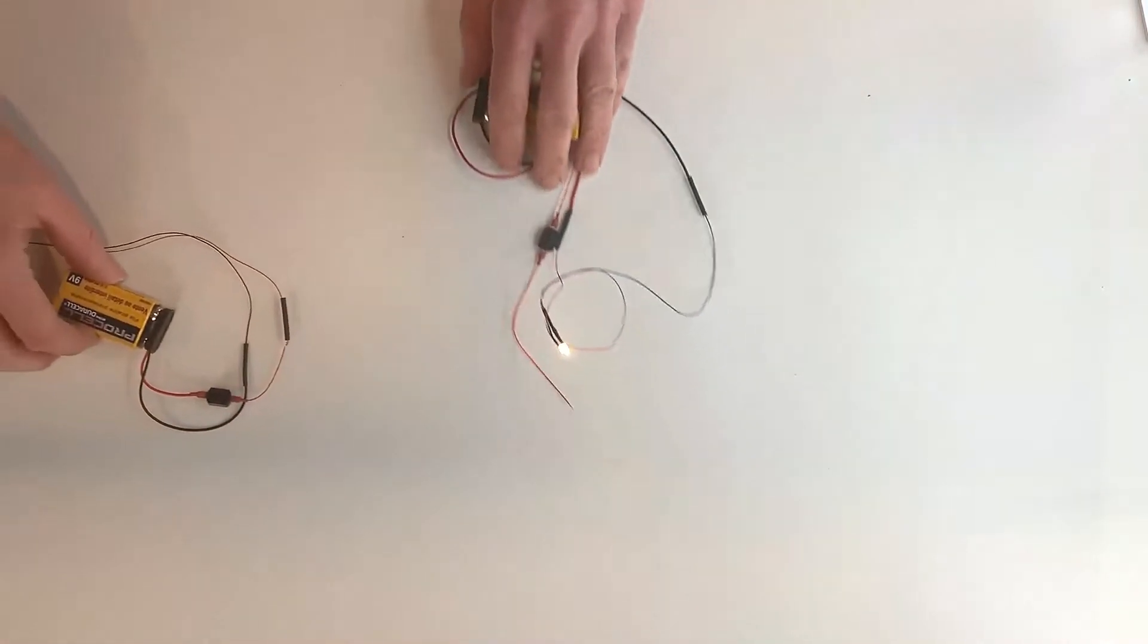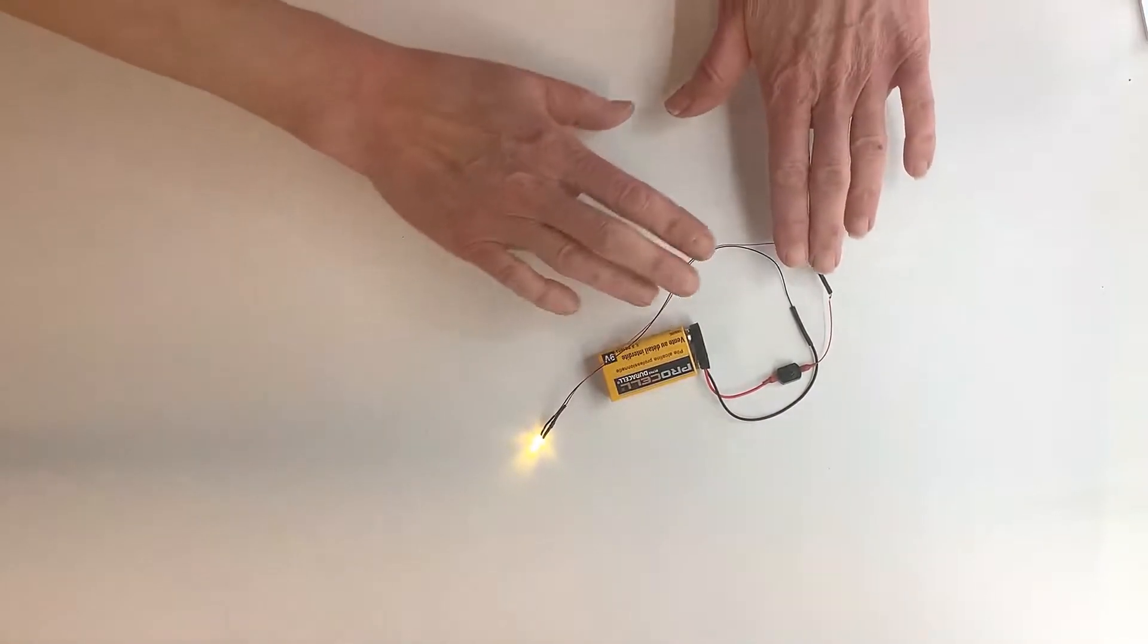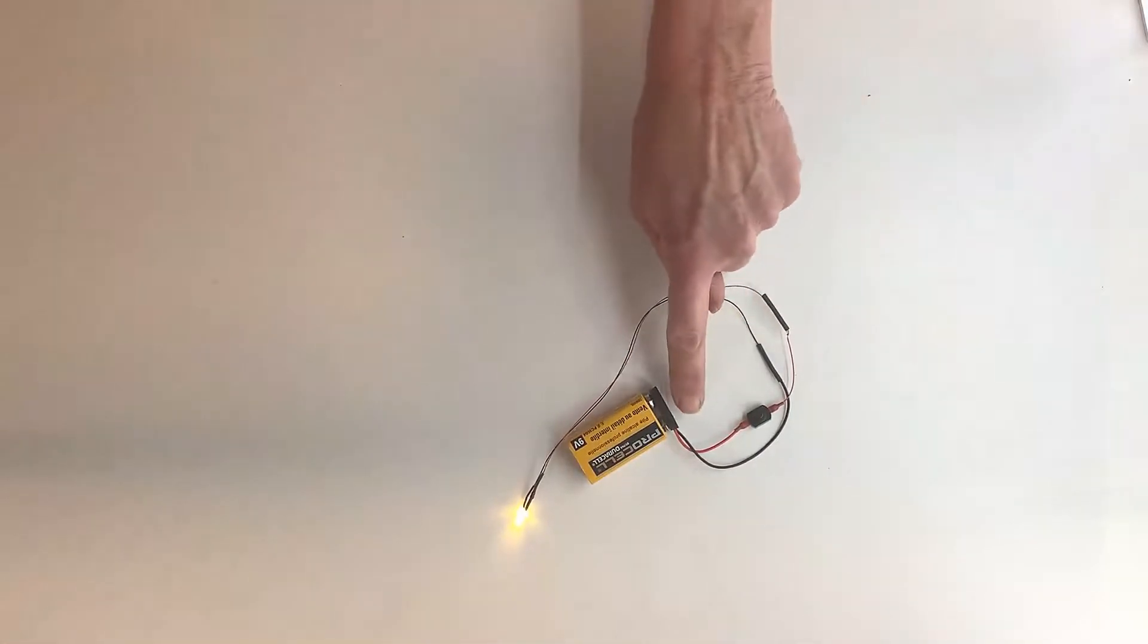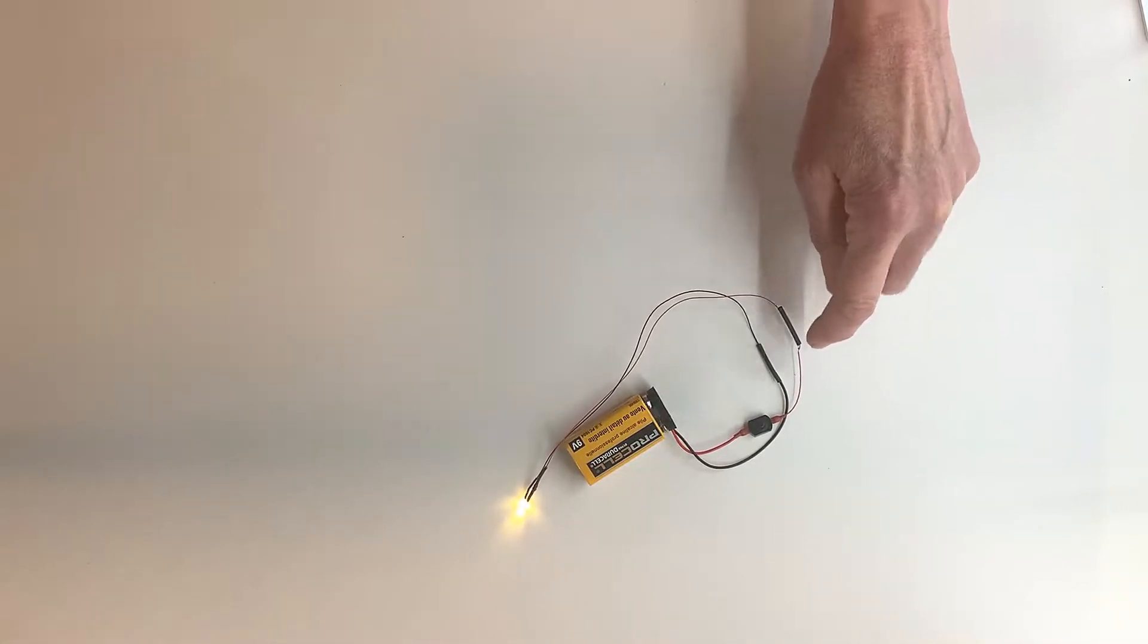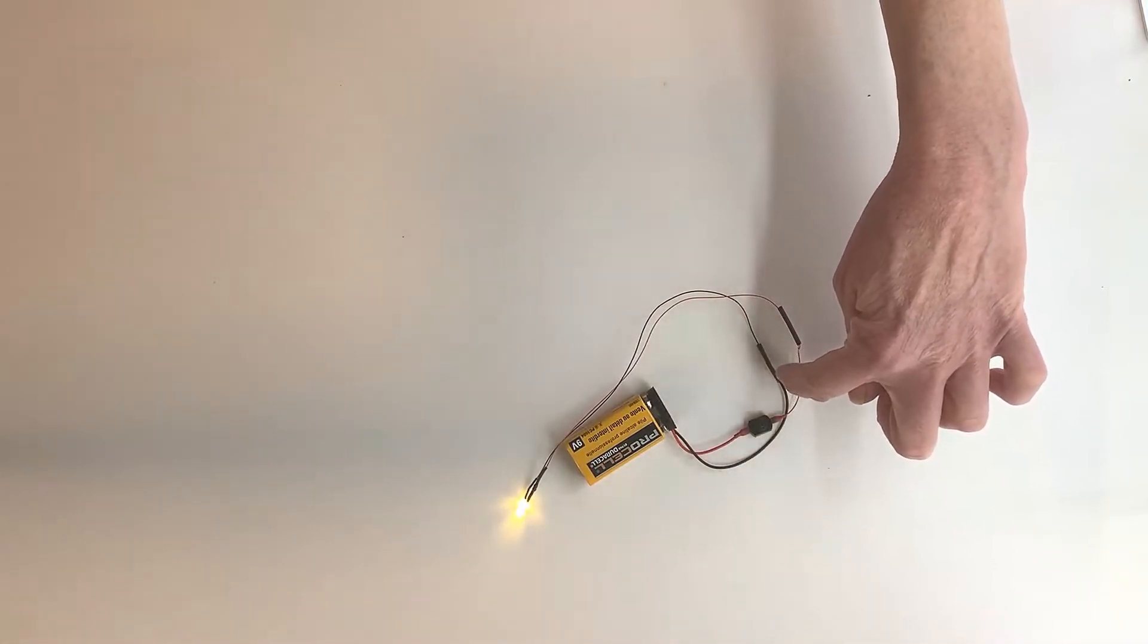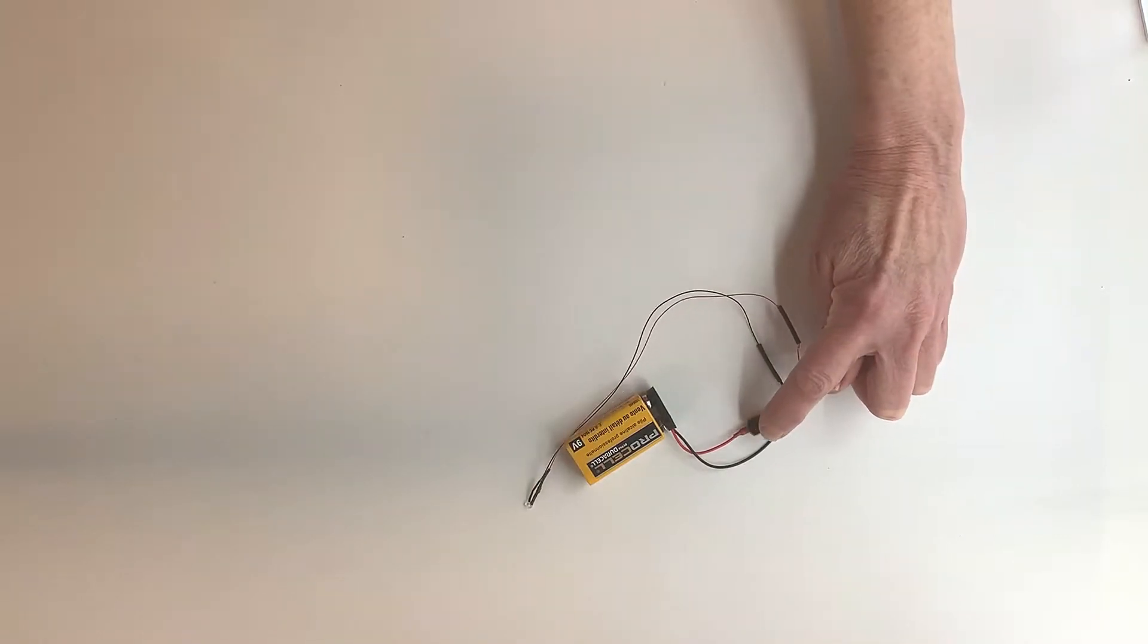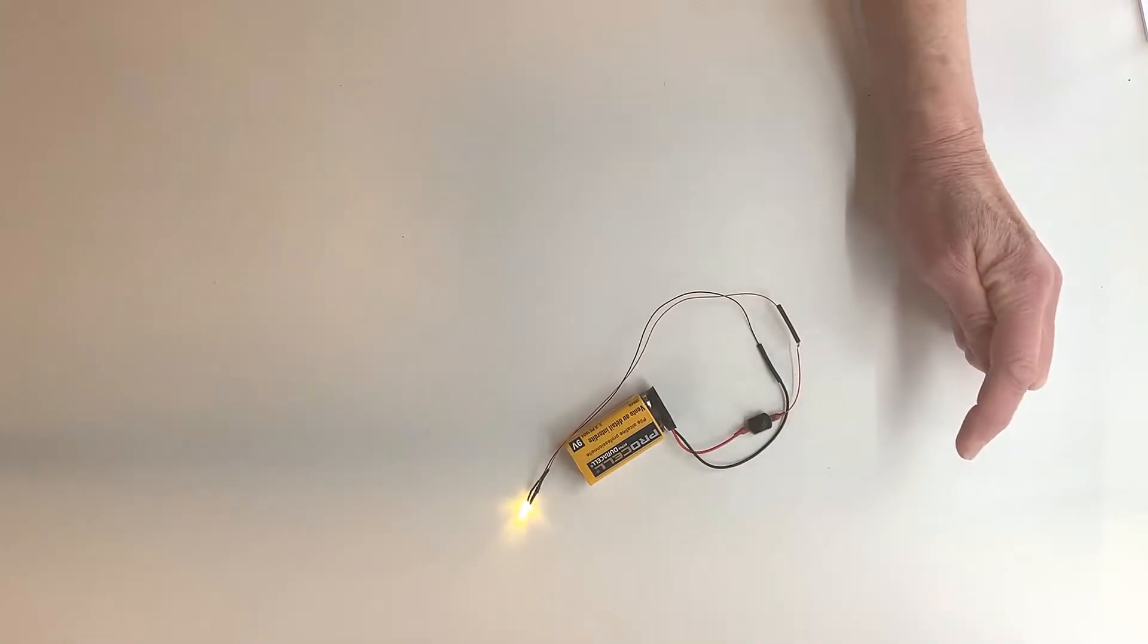In this example, we've added a switch so you see the power goes to the switch and then on out to the LED. The negative from the power goes directly to the LED. Now we can easily turn our LEDs on and off.